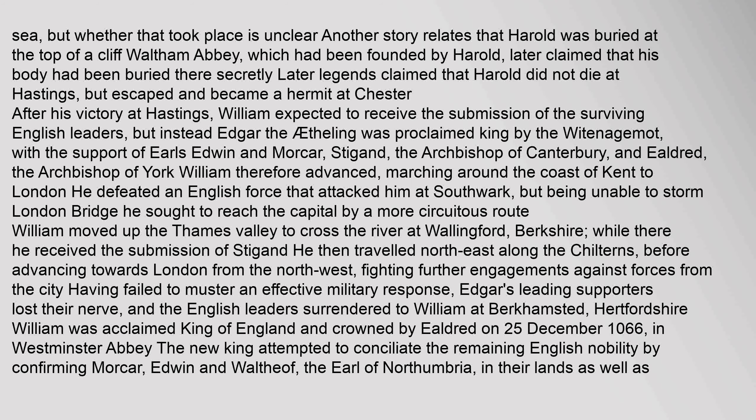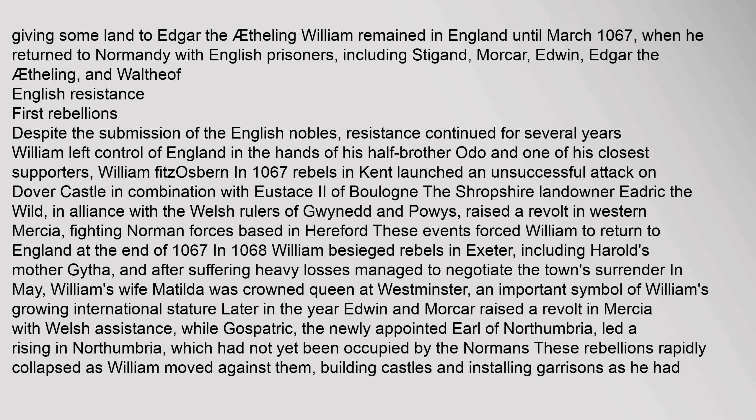The new king attempted to conciliate the remaining English nobility by confirming Morcar, Edwin and Waltheof, the Earl of Northumbria, in their lands as well as giving some land to Edgar the Aetheling. William remained in England until March 1067, when he returned to Normandy with English prisoners, including Stigand, Morcar, Edwin, Edgar the Aetheling, and Waltheof.